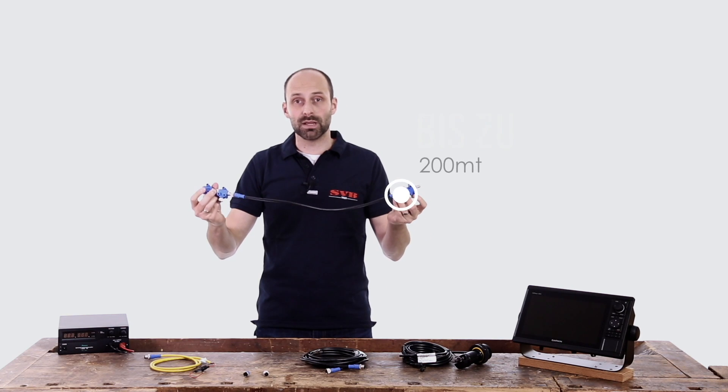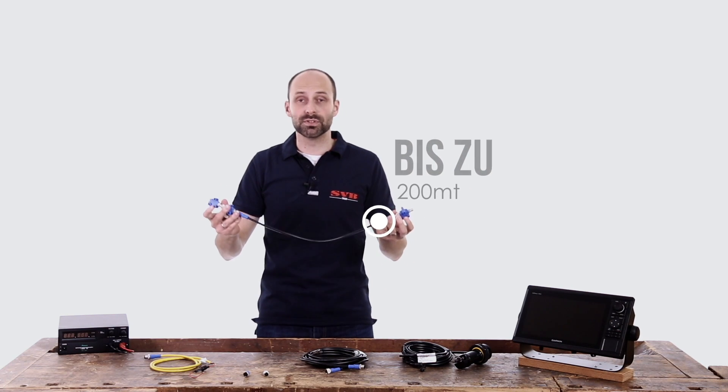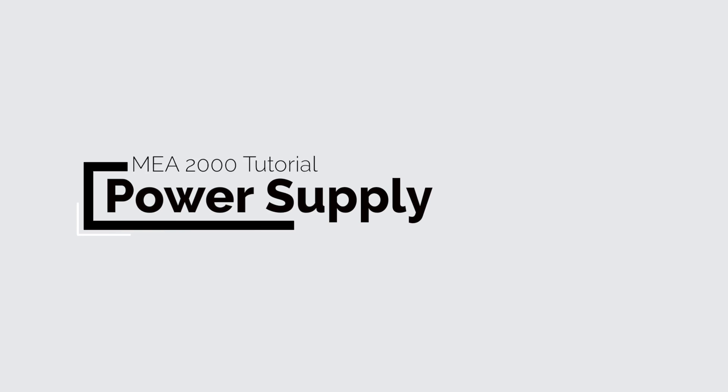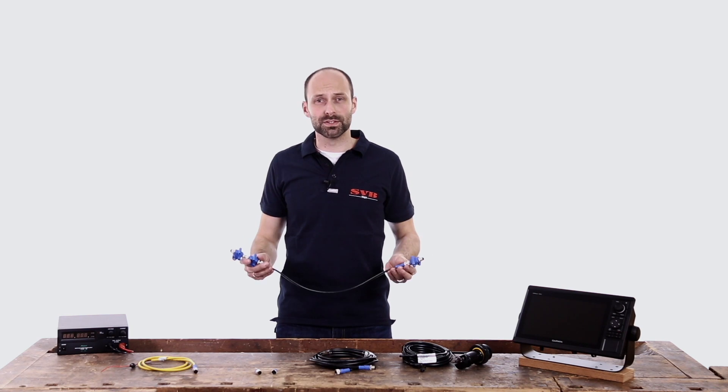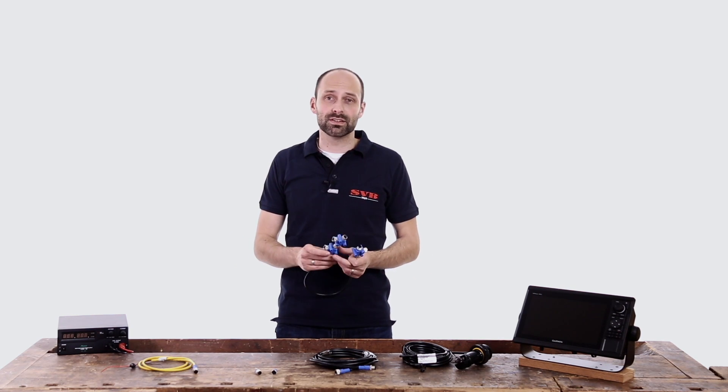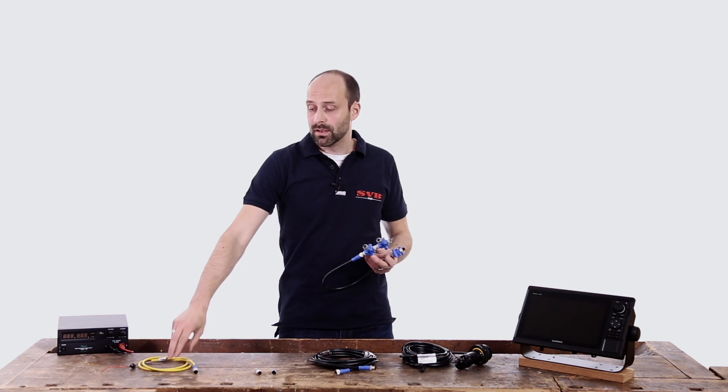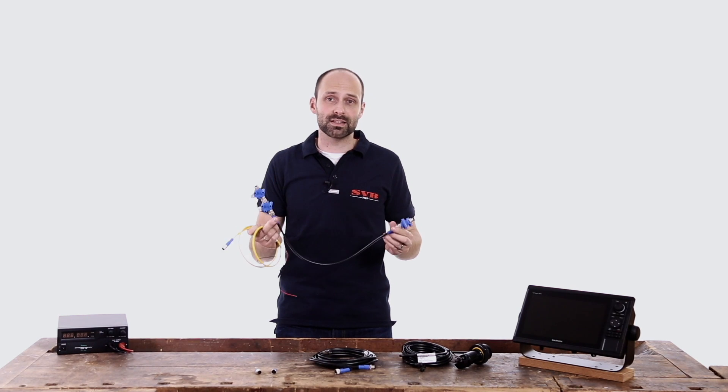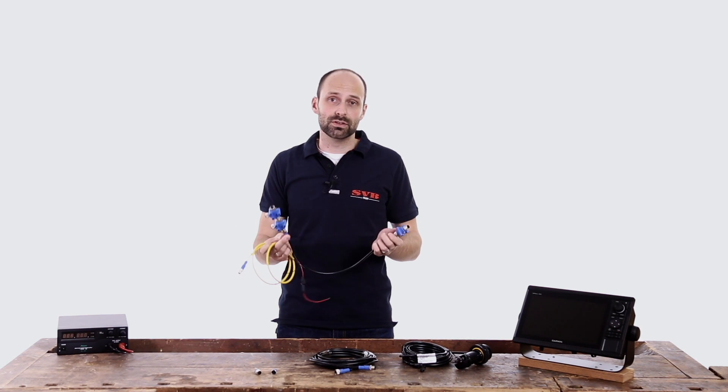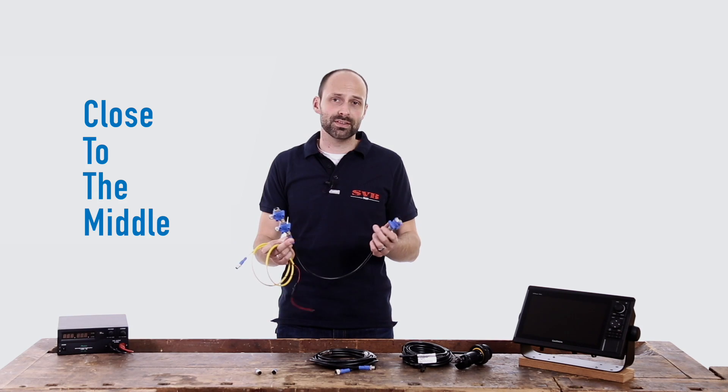The total length of a backbone may reach up to 200 meters depending on the type of cable. Now we come to the power supply for the network. The network receives power by integrating the included Micro-C power cable into the network.